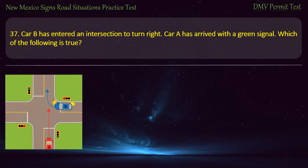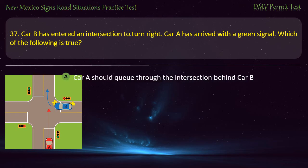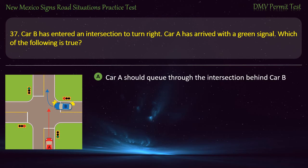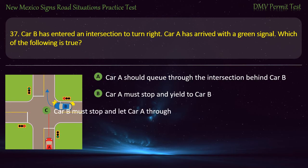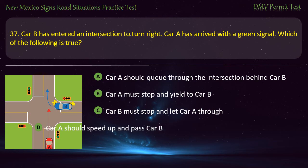Question 37. Car B has entered an intersection to turn right. Car A has arrived with a green signal. Which of the following is true? Options: Car A should queue through the intersection behind Car B; Car A must stop and yield to Car B; Car B must stop and let Car A through; or Car A should speed up and pass Car B. Answer: Car B must stop and let Car A through.